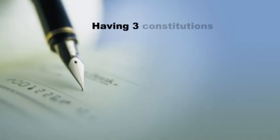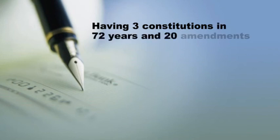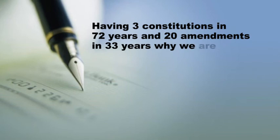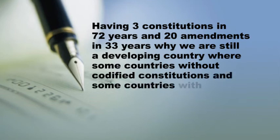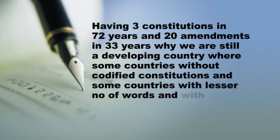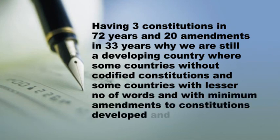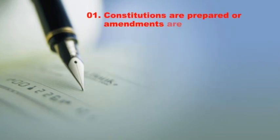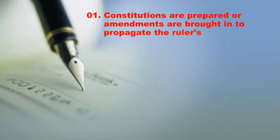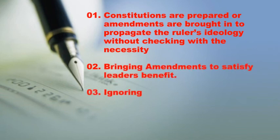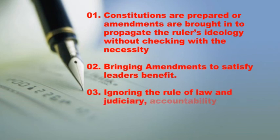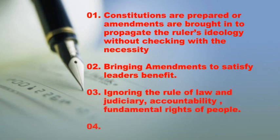Question 19: Having three constitutions in 72 years and 20 amendments in 33 years, why are we still a developing country, while some countries without codified constitutions and some with lesser words and minimum amendments have developed and advanced? Possible answers: Constitutions and amendments are prepared to propagate the ruler's ideology without checking necessity; bringing amendments to satisfy the leader's benefit; ignoring the rule of law, judiciary, accountability, and fundamental rights of people.